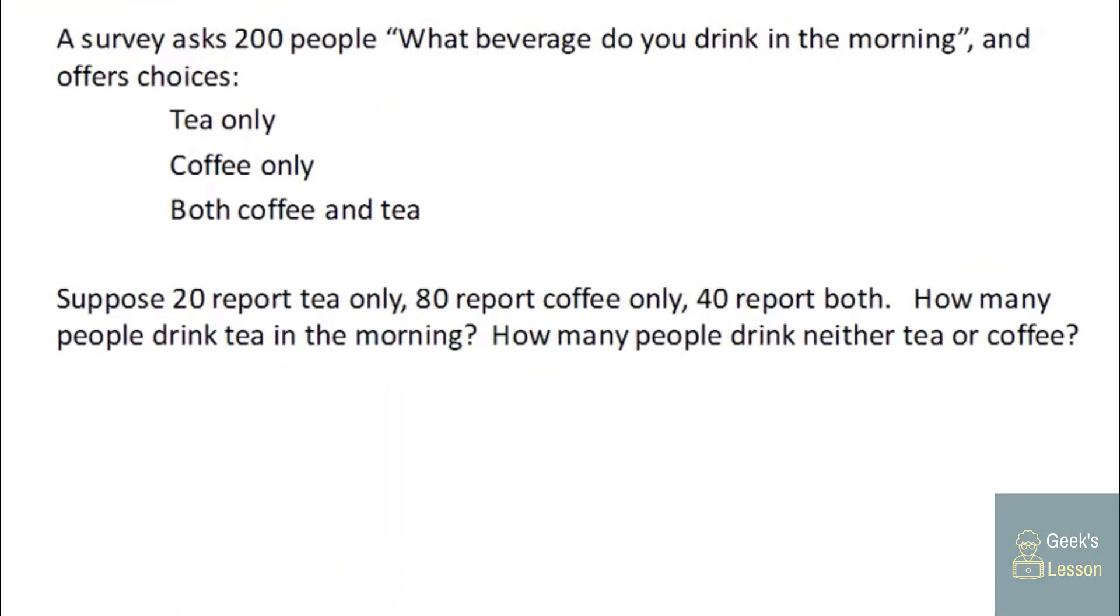So a survey asks 200 people, what beverage do you drink in the morning? And offers these choices: tea only, coffee only, or both coffee and tea. Now suppose that 20 report tea only, 80 report coffee only, 40 report both. Could we figure out how many people total drink tea in the morning? How many people drink neither tea or coffee? To do this, we're going to use a Venn diagram, because it gives us a nice way to picture what's going on.